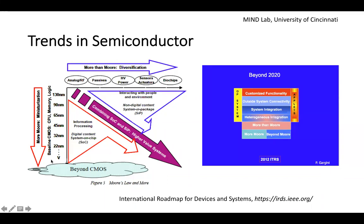More than More asks how to integrate more functionality — instead of a logic device only doing logic, how can it also incorporate sensors, RF communication, or energy harvesting? These two approaches — More Moore and More than More — are now very important in the semiconductor industry. More than More is achieved by various packaging technologies such as 2.5D integration, 3D integration, monolithic integration, and system integration with customized functionality. This is how the semiconductor roadmap is moving in terms of developing process technology.